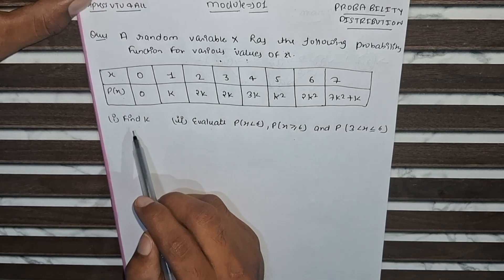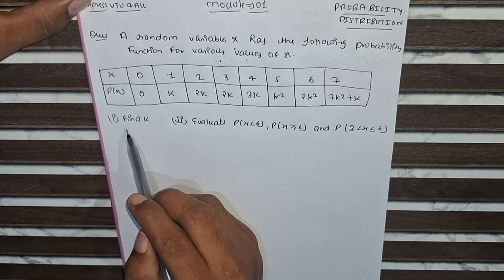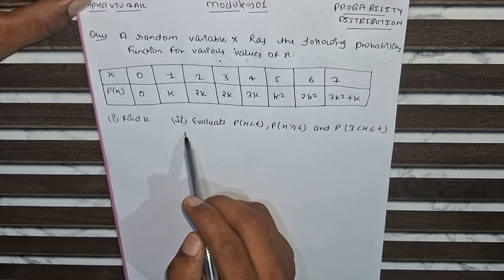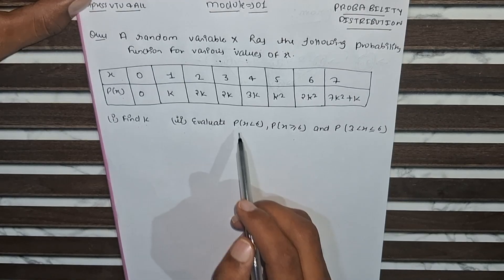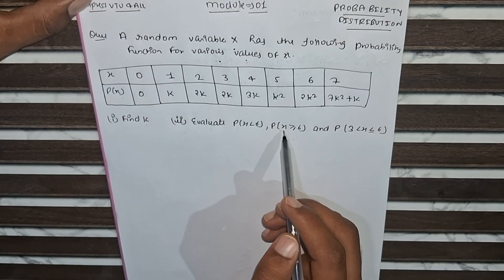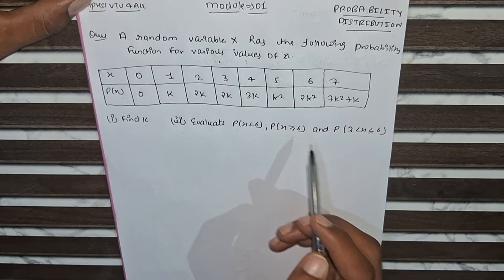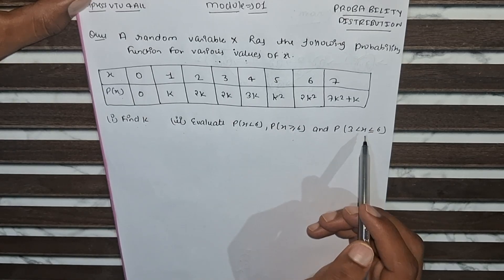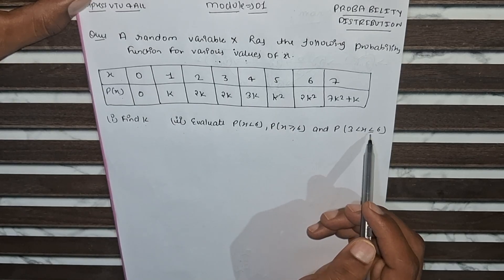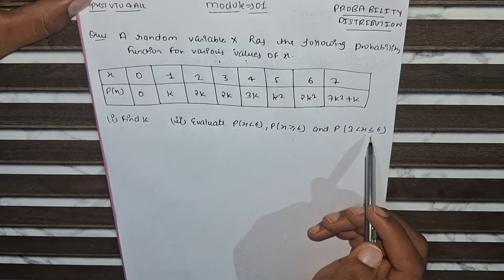In this question we have to find two parts. The first part is to find k. The second part is to evaluate P(X < 6), P(X ≥ 6), and P(3 < X ≤ 6).